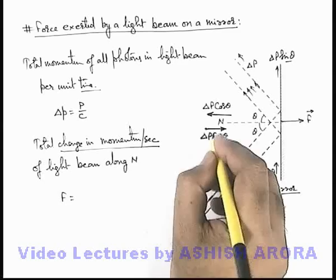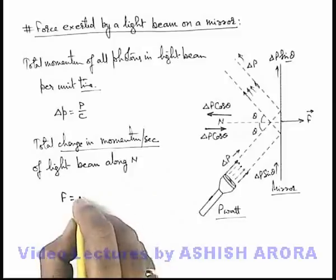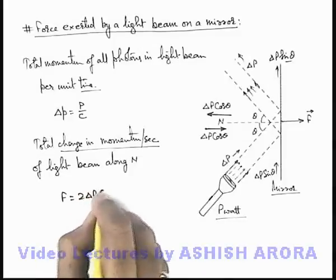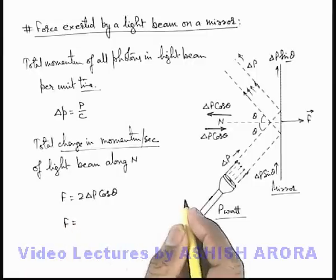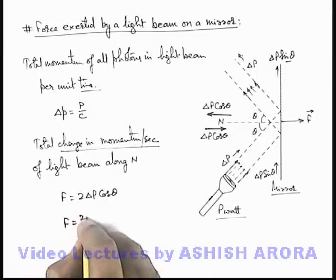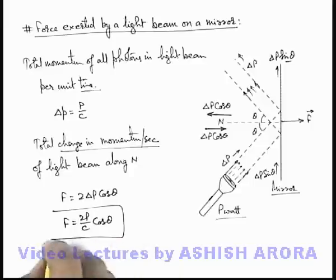And the magnitude of force is the change in momentum. As in direction it is reversed, so it can be written as 2 delta P cos theta. If we substitute the value of delta P, the value of force exerted on mirror we can write as 2P by C cos theta. This is the result we are getting.